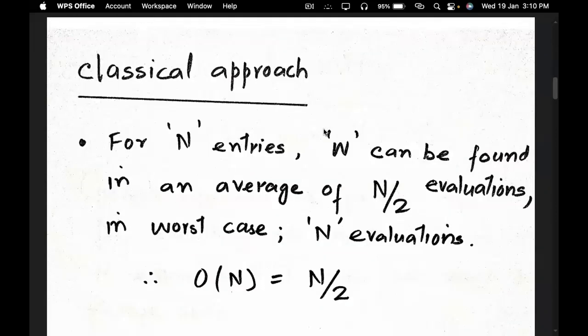Now let's look at the classical approach. If we have N number of entries, the winning state W can be found in an average of N/2 evaluations. For example, with 1000 entries we have to search 500 times to have a 50% probability of locating it. In the worst case, we have to search N times — with 1000 entries, that means 1000 evaluations. This is a very cumbersome process.